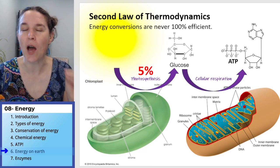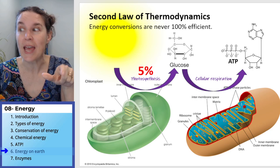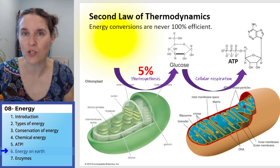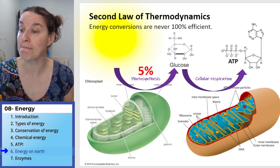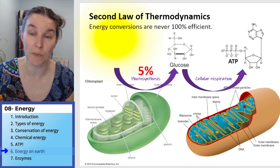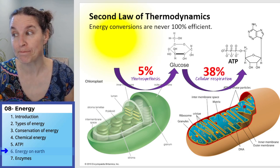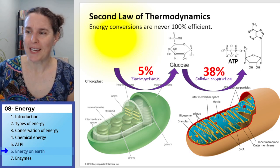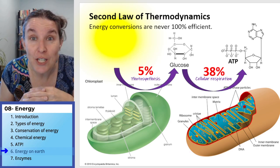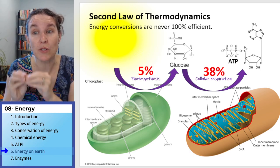5% of the energy that comes in from the sunshine is actually effectively captured and turned into glucose. What about cellular respiration? How much of that glucose molecule then can be captured and stored as ATP, which is very easily used by your body? About 38%. So this is a little more efficient, the transfer from glucose to ATP.